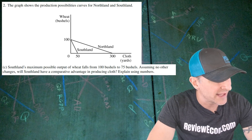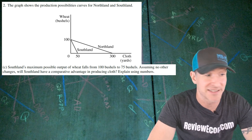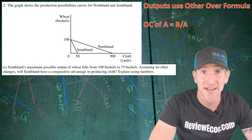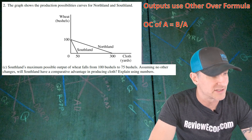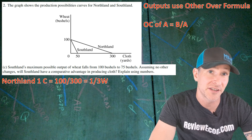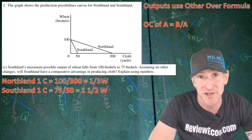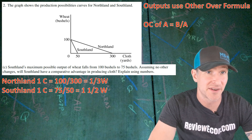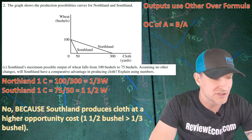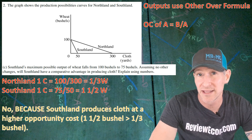For part C, we are told that Southland's maximum possible production of wheat changes from 100 bushels to 75 bushels. Assuming no other changes, we are asked if Southland has a comparative advantage in the production of cloth, and we must explain using numbers. Using the other-over formula again: Northland's opportunity cost of cloth is 100 divided by 300, which is one-third a bushel of wheat per yard of cloth. For Southland, with the updated numbers, it is 75 divided by 50, which equals one and a half bushels of wheat per yard of cloth. The answer is no — Southland produces cloth at a higher opportunity cost. One and a half bushels is greater than one-third of a bushel. That gets you your next point.